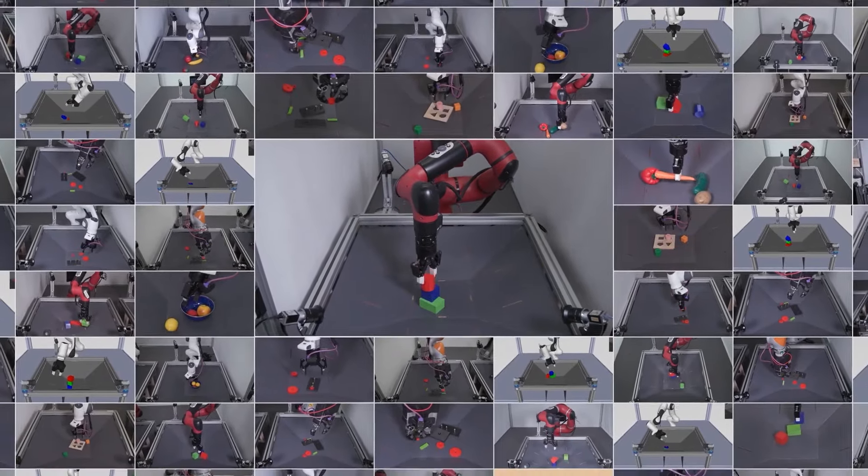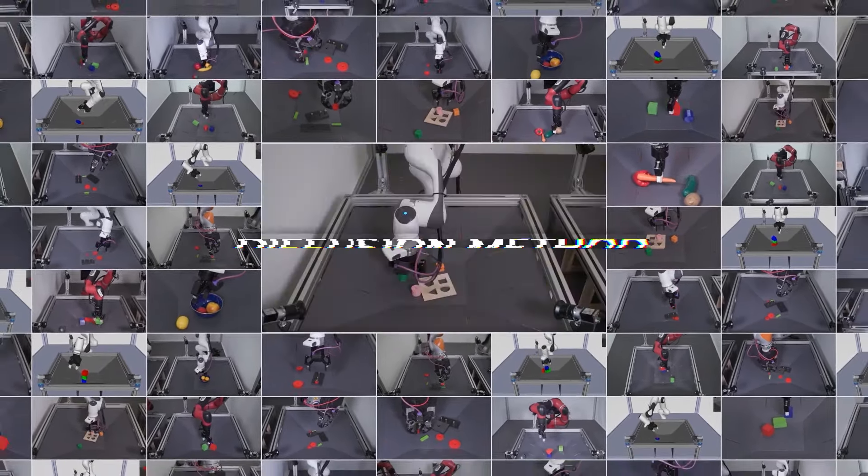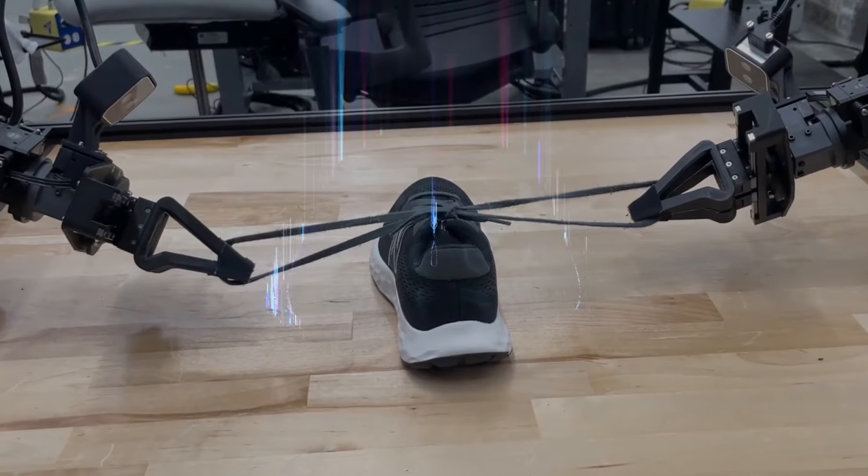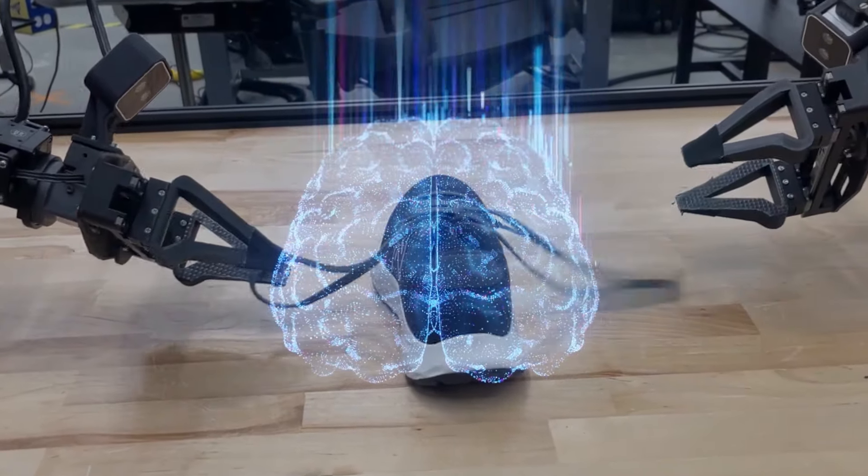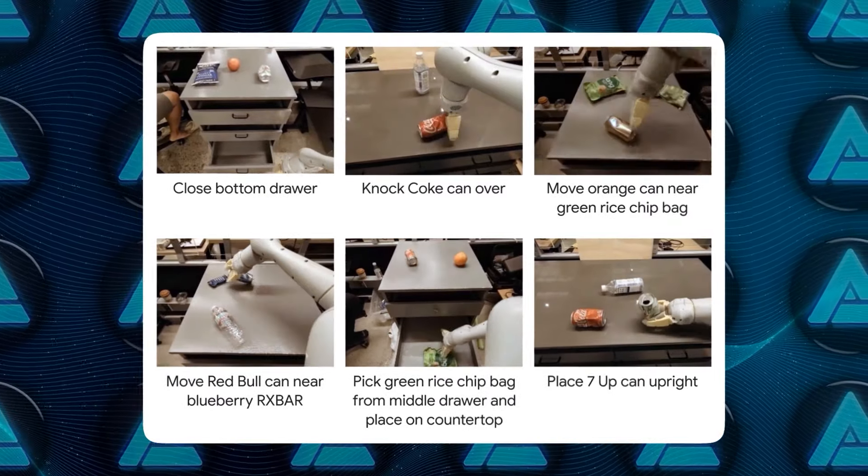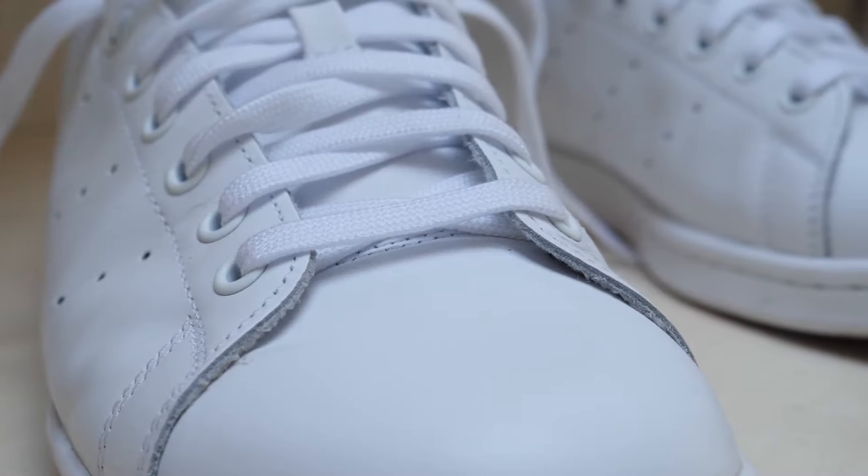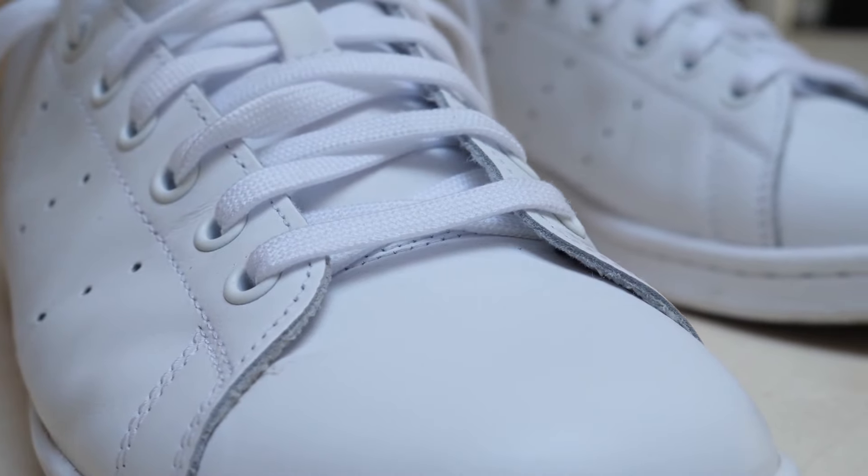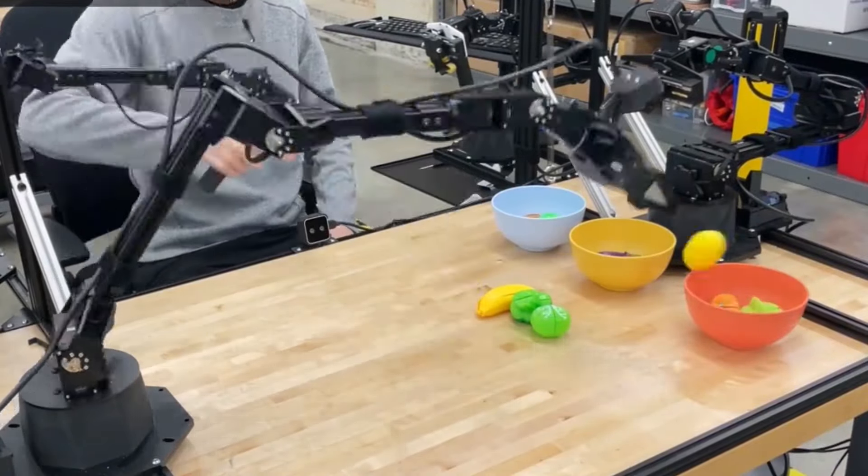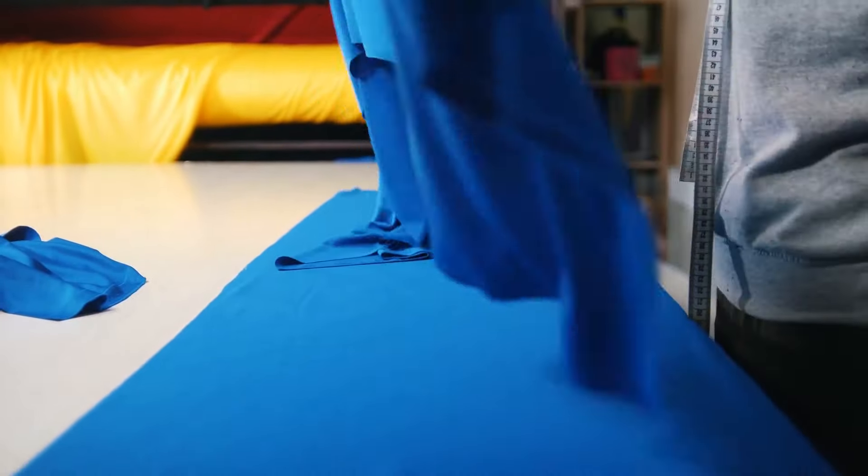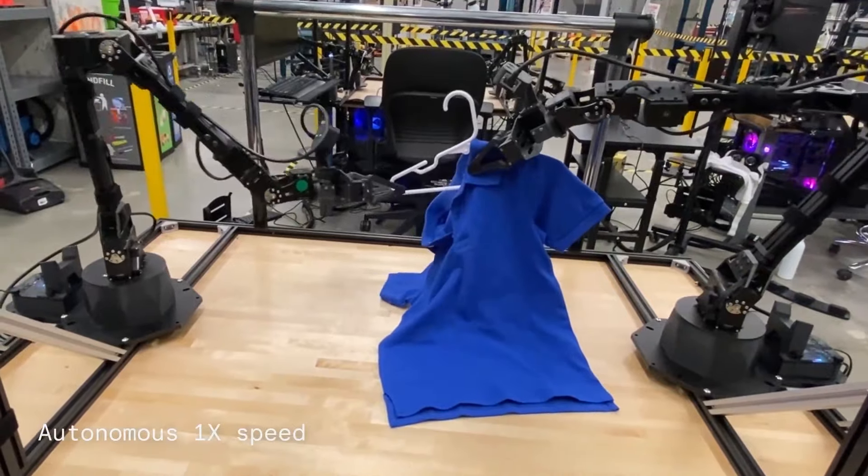One of the key advancements here is the use of what's called a diffusion method, which helps predict the robot's actions based on random noise, akin to how image generation AI works. The diffusion method smooths out the learning process, ensuring that the robot not only mimics the human, but adapts to variations in the task, like if the shoelace is slightly more or less taut than expected. This means the robot doesn't need to be micromanaged or shown thousands of examples to get it right. It learns from a few high-quality demonstrations and can execute the task with minimal additional input.